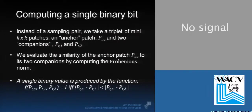Now, how in LATCH do we compute a single binary bit? First, instead of taking a sampling pair, we take a triplet of three mini patches. One is denoted as the anchor and the other two as the two companions. We evaluate the similarity of the anchor patch to each one of the companions in the sum of squared differences sense.